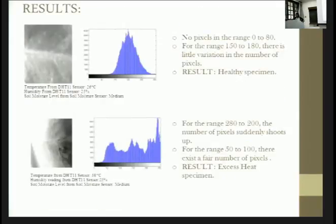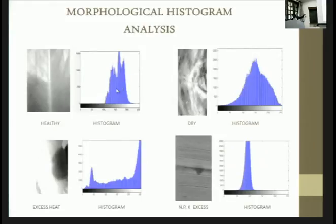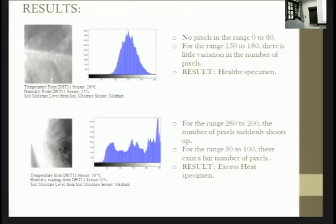The test image—this is the first test image that we took. The temperature and the humidity and the soil moisture is taken from the IoT sensing network that is taking the environmental condition. When you see the histogram of the image that is brought by the image processing network, we see that there is very less variation. It's very similar to the healthy image. Because, as you can see, there are no pixels here, so there is no dark region. Most of the pixels are lined here. That is how we come to know that it is a healthy specimen.